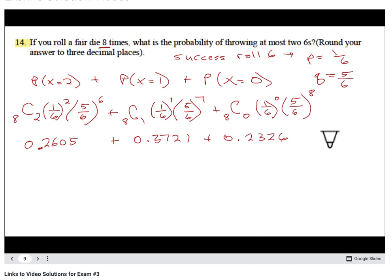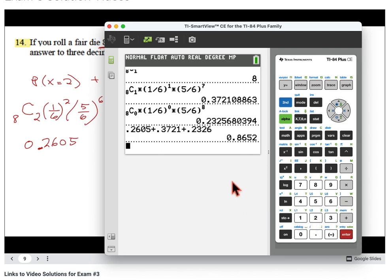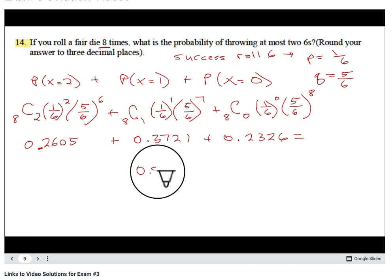And then we're going to add these values all together, and that will give us this probability of at most two sixes. Seems like a pretty big probability, but in eight rolls it just means we got two sixes, one six, or zero six - those are all that could happen. 0.2605 plus 0.3721 plus 0.2326 equals, to three decimal places, 0.865. Answer.